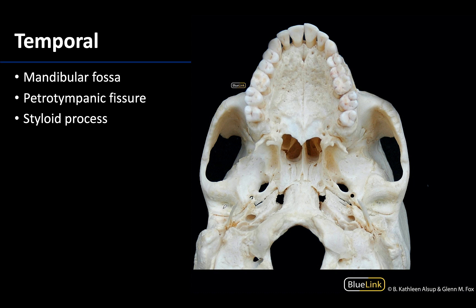The mandibular fossa is this depressed region right here and is the cranial portion of the temporomandibular joint. It is a smooth area because articular cartilage really sits in this region during life. The petro-tympanic fissure is just posterior to the mandibular fossa — it is very thin and usually easiest to locate just posterior to that region. The chorda tympani will exit the skull here.